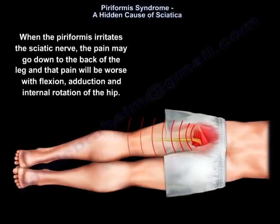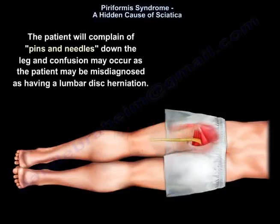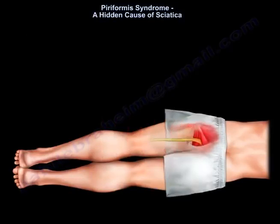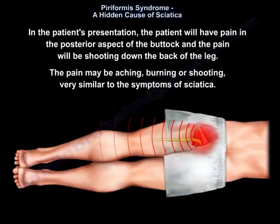The pain associated with piriformis syndrome is usually deep in the buttock and posterior thigh. It may also include the posterior aspect of the leg because the sciatic nerve goes from the buttock all the way down to the thigh and to the leg. When the piriformis irritates the sciatic nerve, the pain may go down to the back of the leg, and that pain will be worse with flexion, adduction, and internal rotation of the hip. The patient will complain of pins and needles down the leg, and may be misdiagnosed as having a lumbar disc herniation. The pain in the posterior aspect of the buttock will be shooting down the back of the leg — aching, burning, or shooting — very similar to symptoms of sciatica.